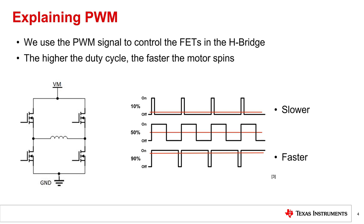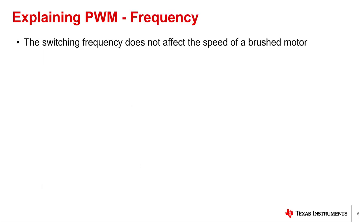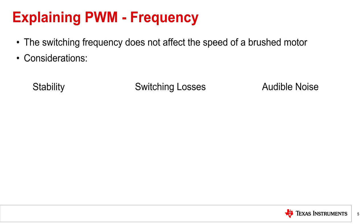Given everything else stays constant, a higher duty cycle will make a motor spin faster than a lower duty cycle. There are, however, considerations to be had when choosing an ideal PWM switching frequency. These are stability, switching losses, and audible noise.